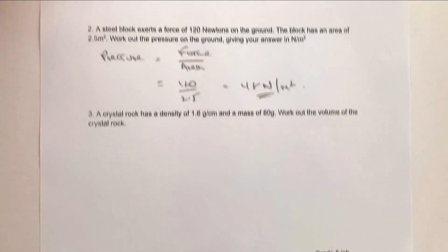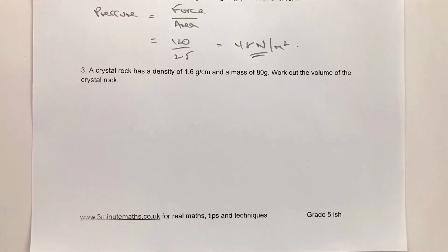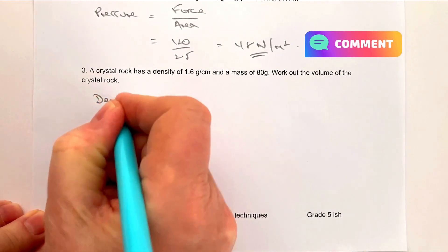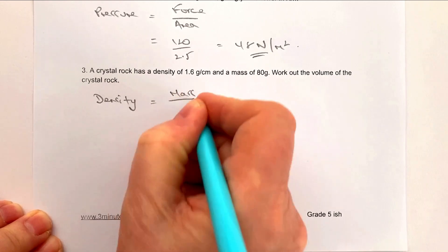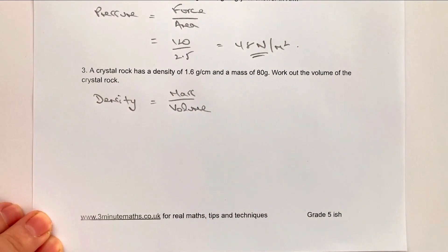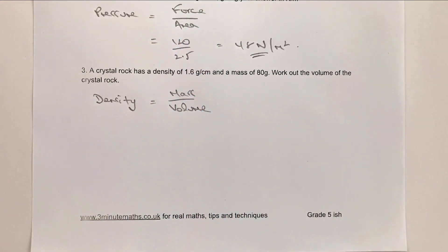Let's move on to question three — if you're not sure about anything, always leave a comment below and I'll come back to you. A crystal rock has a given density and mass; work out the volume. Again we're going to use density equals mass divided by volume. I always suggest you write the formula you're working with — it's really important to get those formulas in your mind.